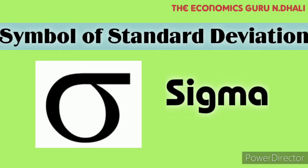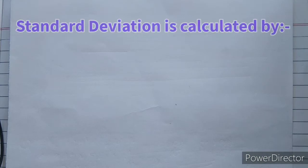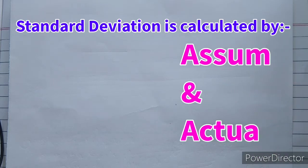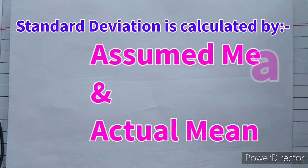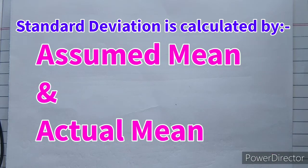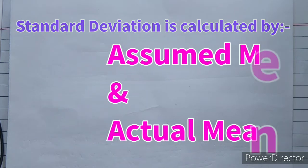The symbol of standard deviation is sigma. We write this symbol in formulas for standard deviation as calculated by the mean. There are two types of mean we have to calculate: assumed mean and actual mean. For assumed mean, we have the shortcut formula. For actual mean, it is also a shortcut. Both have different formulas that we discuss at the end of the video.